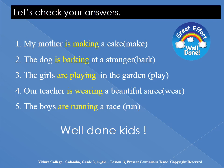Number one: My mother is making a cake. See — for 'make' we drop 'e' and add -ing. The helping verb is 'is.' Number two: The dog is barking at a stranger. The verb stem is 'bark' — we add -ing. 'Dog' is singular, so we use 'is': is barking.